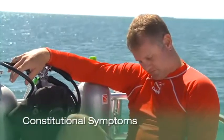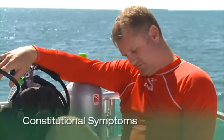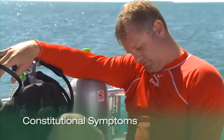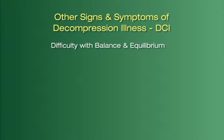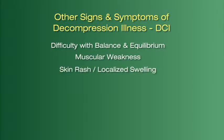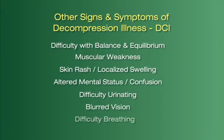Constitutional symptoms are generalized symptoms that do not impact a particular part of the body, but include extreme fatigue, general malaise, and nausea. Other signs and symptoms of DCI include difficulty with balance and equilibrium, muscular weakness, skin rash or localized swelling, altered mental status or confusion, difficulty urinating, blurred vision, and difficulty breathing.